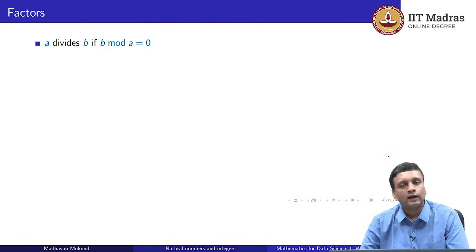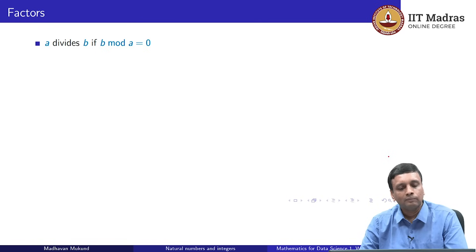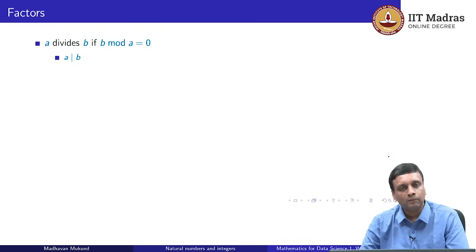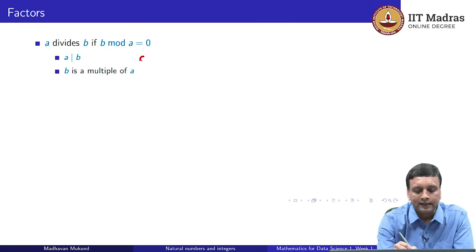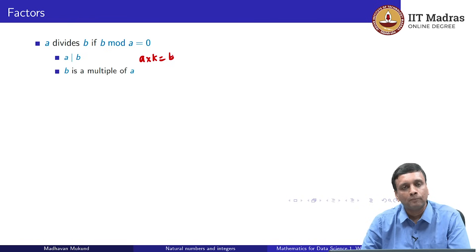We will often need to use this remainder, and there is a notation for it called modulus, written as mod. So 19 mod 5 is the same as the remainder when 19 is divided by 5, which is 4. With this notation we can define what a factor is: a factor is a number which divides a bigger number evenly without any remainder. A divides b if b mod a equals 0 — meaning if b is divided by a there is no remainder. We write this with a vertical bar: a | b means a divides b, or equivalently b is a multiple of a.